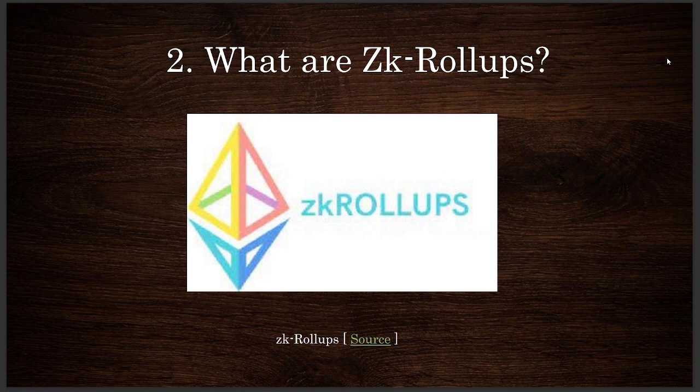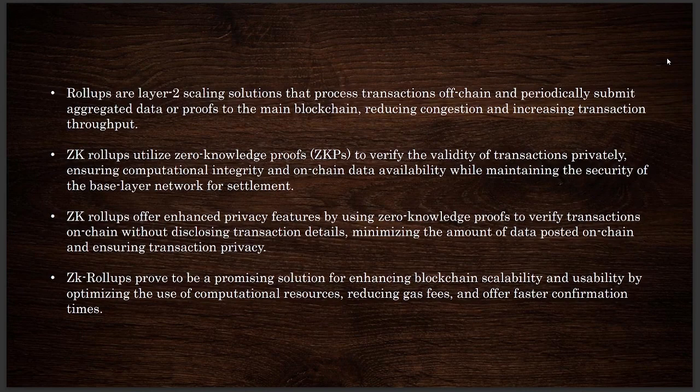We discussed that Polygon Hermez is an open source ZK rollup solution. What exactly are ZK rollups? What are zero knowledge proofs? What is the rollup technology? Rollups are a layer 2 scaling solution. They process transactions off-chain and periodically submit aggregated data and proofs to the main blockchain, reducing congestion and increasing transaction throughput.